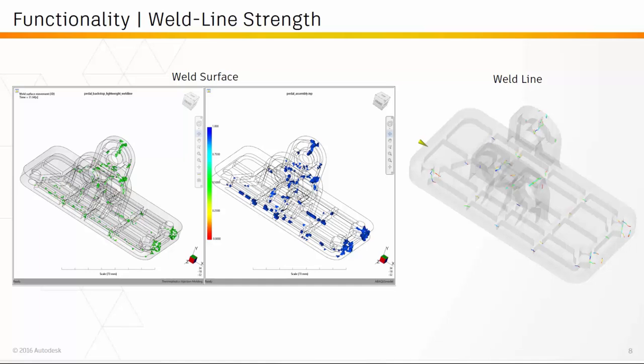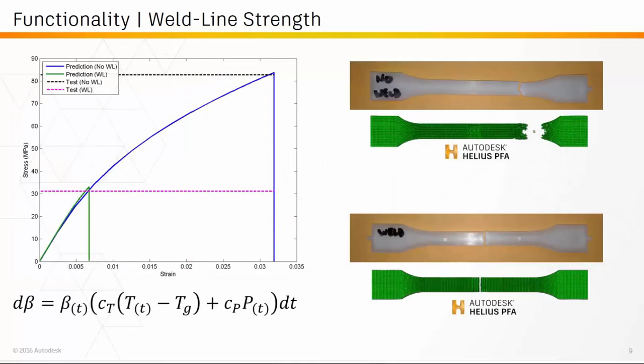In addition to allowing the mapping of the 3D weld surface, we have also developed a weld line strength prediction formulation within Helios PFA. This prediction and the mathematical model is shown on the bottom of the screen — it is a long equation. The strength prediction is a function of the temperature history, the pressure history, and the flow front meeting angle of every single point in the weld surface. So Helios will survey all of the points in the 3D weld surface, look at the history from the molding simulation, and come up with a strength reduction factor for that material.